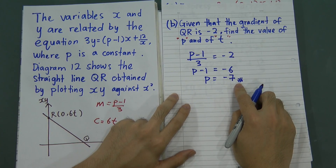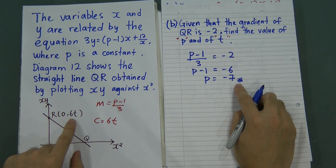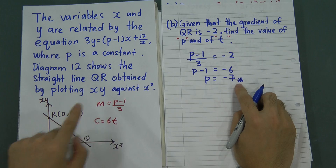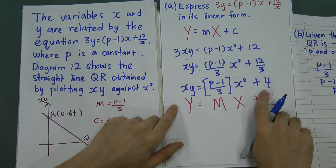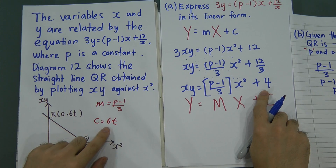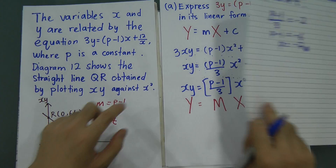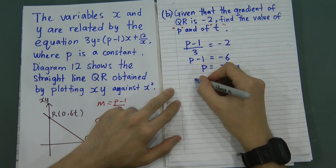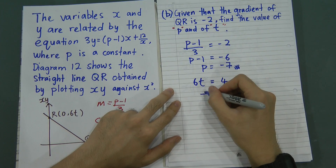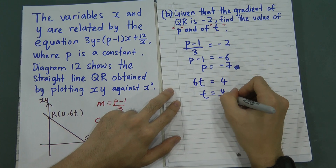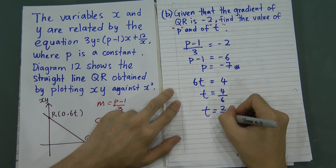Next, we find t. From our linear form, c = 4, which is the y-intercept. Since 6t is the y-intercept, we have 6t = 4. Solving: t = 4/6, which simplifies to t = 2/3.